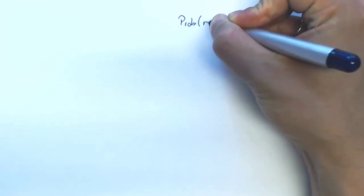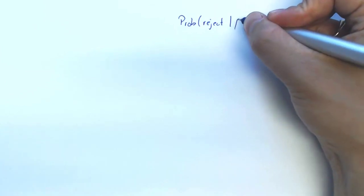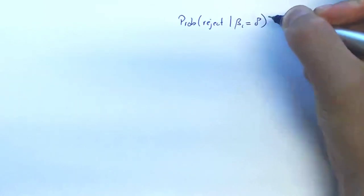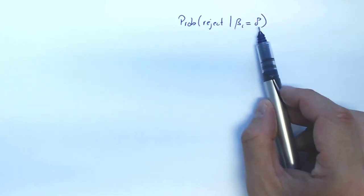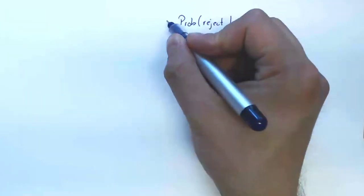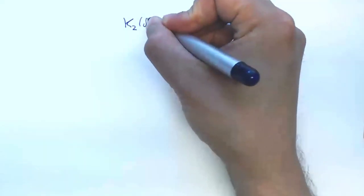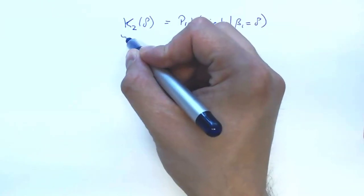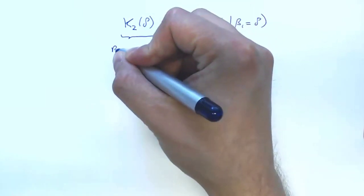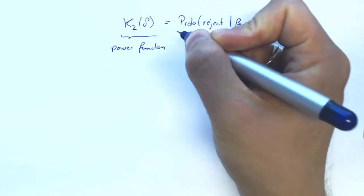So clearly the probability of rejecting depends on the distance from the null hypothesis. And I can think of a function that for every distance delta gives me the probability of rejecting. Let's call this function k2 and it takes arguments delta corresponding to a distance. And this function is called the power function of the two-sided t-test.